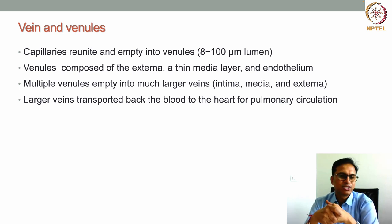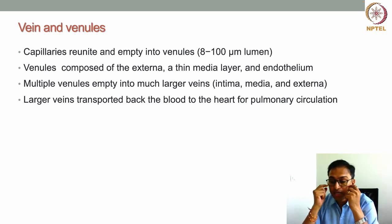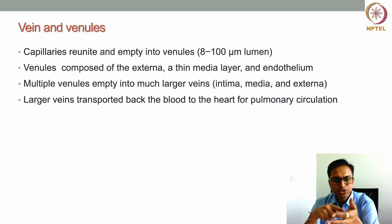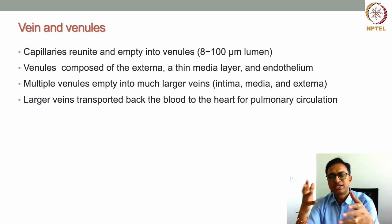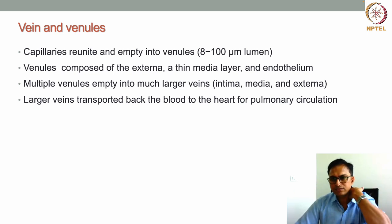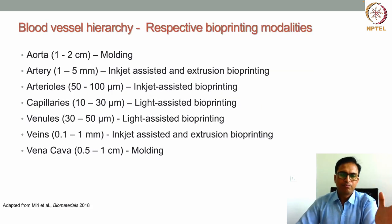Larger veins transport blood back to the heart for pulmonary circulation. In summary, blood starts from the heart, travels through the aorta, to arteries, to arterioles, to capillaries, to venules, to veins, and to the vena cava, completing both pulmonary and systemic circulation.